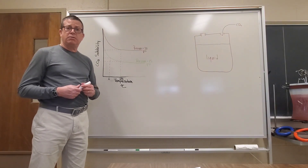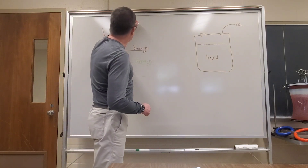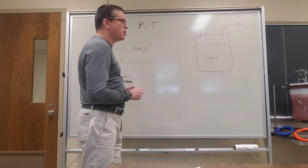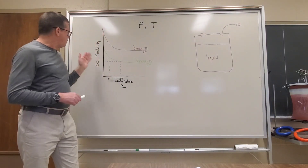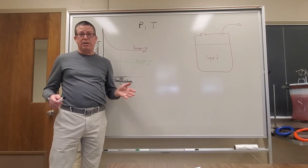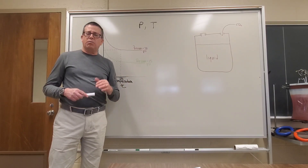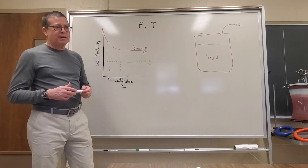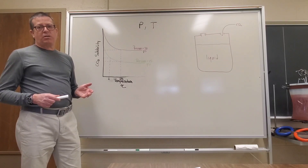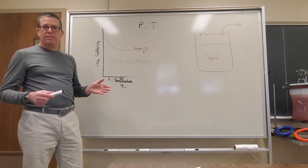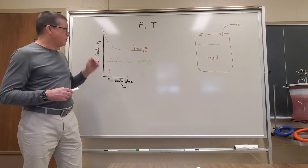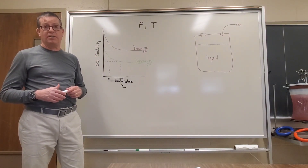So really what we want to focus on are those two variables: pressure and temperature. When we talk about carbon dioxide solubility, what are we really talking about? This is a concentration - specifically, the number of carbon dioxide molecules that we can force into a given volume of kombucha. That's essentially what our carbon dioxide solubility is a measurement of.